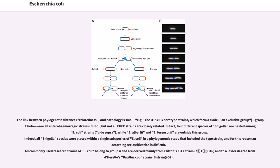The link between phylogenetic distance and pathology is small. For example, the O157:H7 serotype strains, which form a clade, are all enterohemorrhagic strains, but not all EHEC strains are closely related. In fact, four different species of Shigella are nested among E. coli strains, while E. albertii and E. fergusonii fall outside this group. Indeed, all Shigella species were placed within a single subspecies of E. coli in a phylogenomic study that included the type strain, and accordingly reclassification is difficult. All commonly used research strains of E. coli belong to group A and are derived mainly from Clifton's K12 strain.